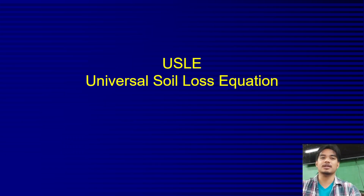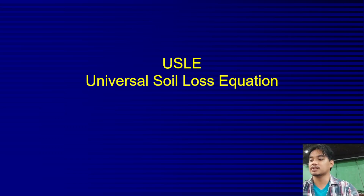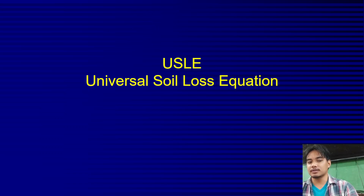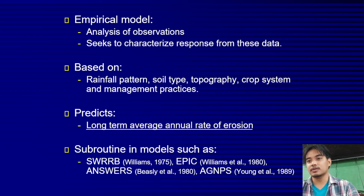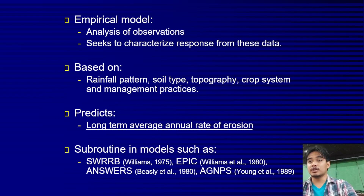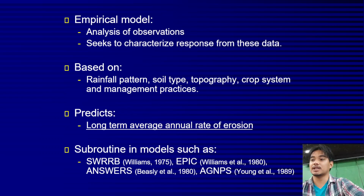The tool we will focus on is the USLE, or Universal Soil Loss Equation. This equation is generally used to check the annual soil loss for a given area. It has many factors. The USLE is an empirical model — it is based on analogies of observation and seeks to characterize the erosion response from the data.